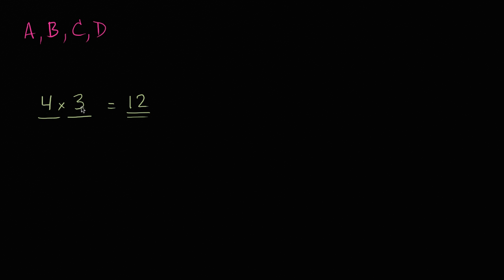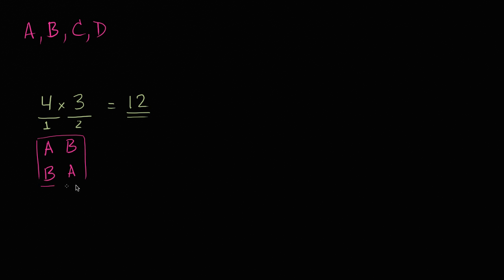You might say this four times three is actually counting the permutations — how many ways can you arrange four people into two buckets of handshakers, where you care about which bucket they're in. This would count A being handshaker number one and B being handshaker number two as different from B being number one and A being number two. But we don't want both of these to occur. A shaking B's hand is the same as B shaking A's hand — we only have to do it once. So we are going to be double counting.